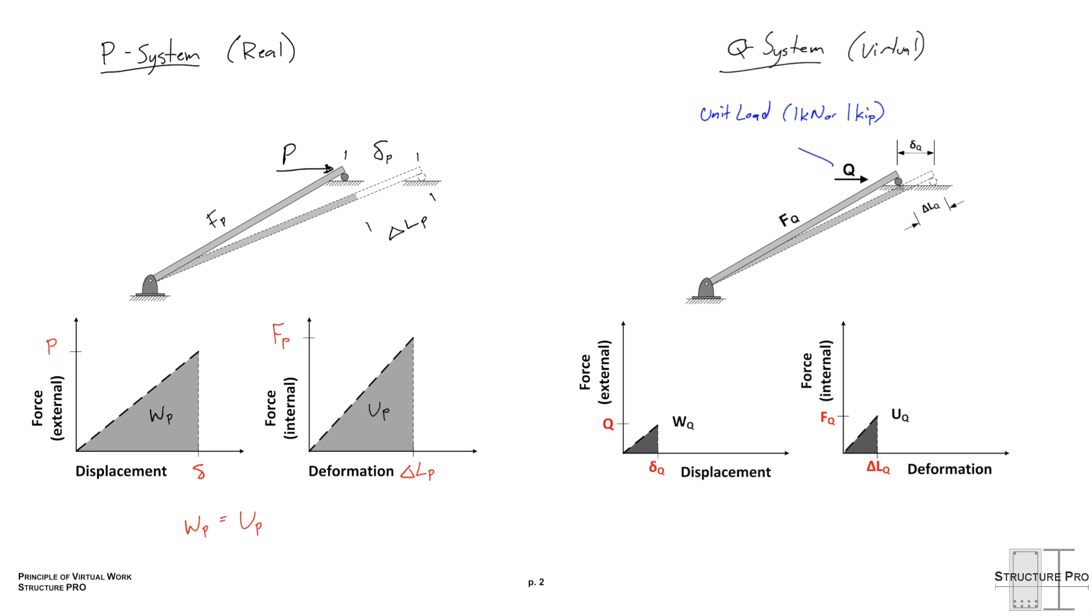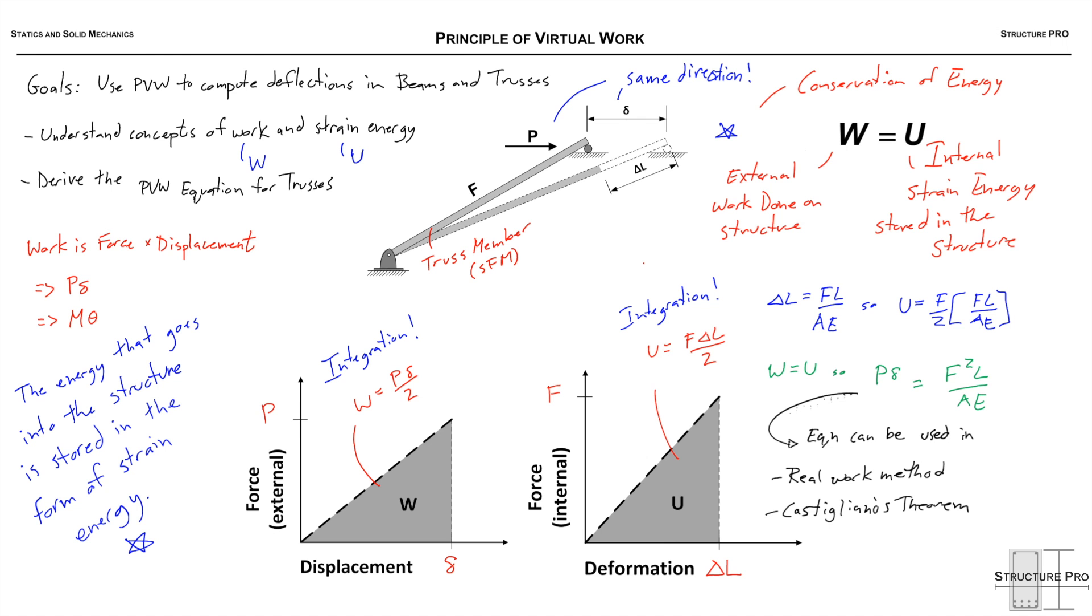Moving over to this Q system, this is where things start to get a little strange. So we're going to apply a load in the direction of the displacement we want to compute. What we're really after is this small delta P on the left side, but we're going to apply this Q on the right side and we're going to choose a value for it. Typically we choose one kilonewton or one kip, but the key thing about Q is it must be in the direction of the desired displacement delta P. But it can be any value you want; equations will still work out. And in the bottom here, very similar to the left side, we have this work done by Q and the energy stored as a result of Q. And we can say that WQ equals UQ.